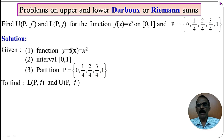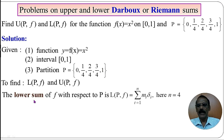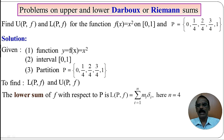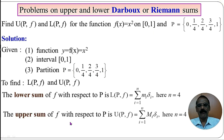What are the formulas for L(P, f) and U(P, f)? The lower sum of f with respect to the partition P is L(P, f), given as summation i = 1 to n of m_i times delta_i, where i runs from 1 to 4 because n = 4 here.